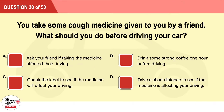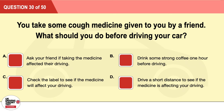Question 30: You take some cough medicine given to you by a friend. What should you do before driving your car? A: Ask your friend if taking the medicine affected their driving. B: Drink some strong coffee one hour before driving. C: Check the label to see if the medicine will affect your driving. D: Drive a short distance to see if the medicine is affecting your driving. The correct answer is C: check the label to see if the medicine will affect your driving.